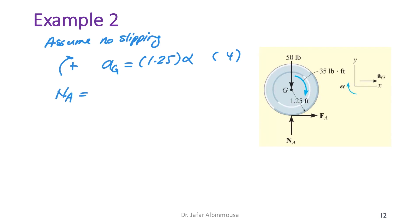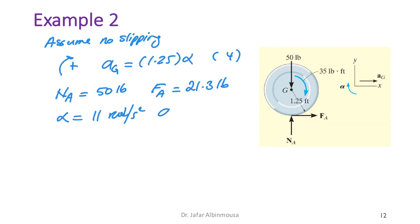Solving all four equations gives: N_A = 50 lb, f_A = 21.3 lb, α = 11 rad/s², and a_G = 13.7 ft/s². We assumed no slipping, so we must now check the condition.